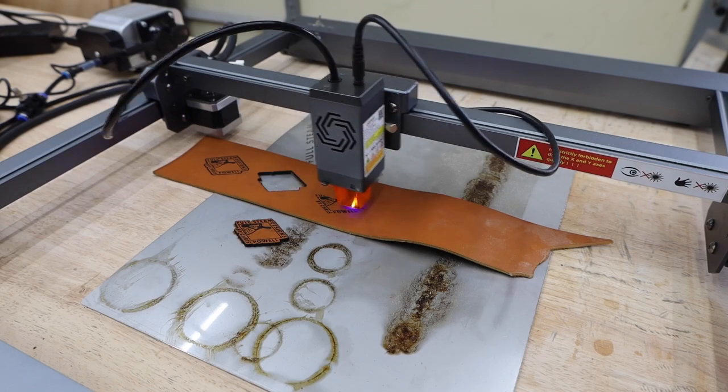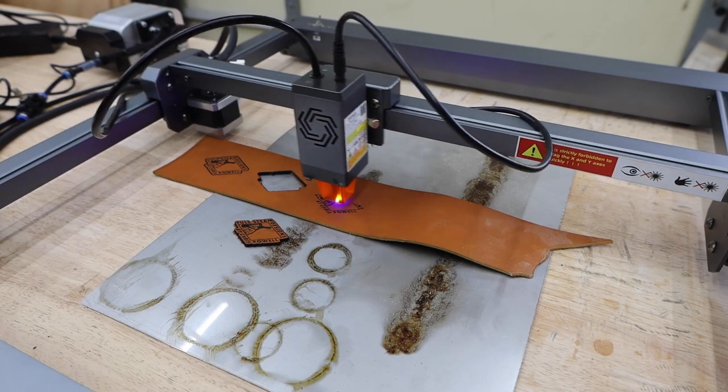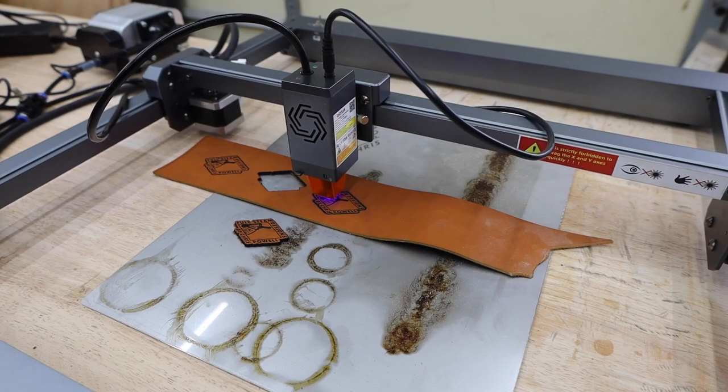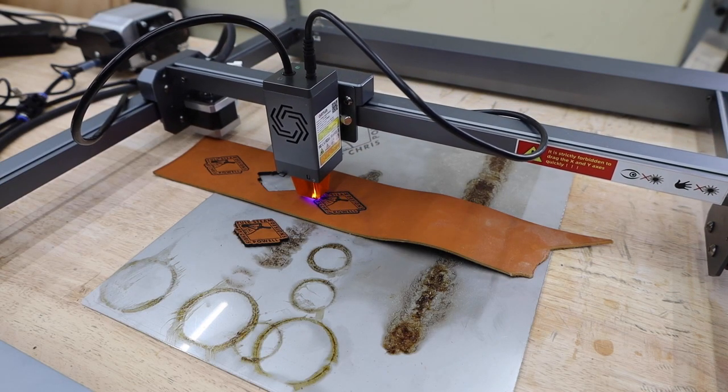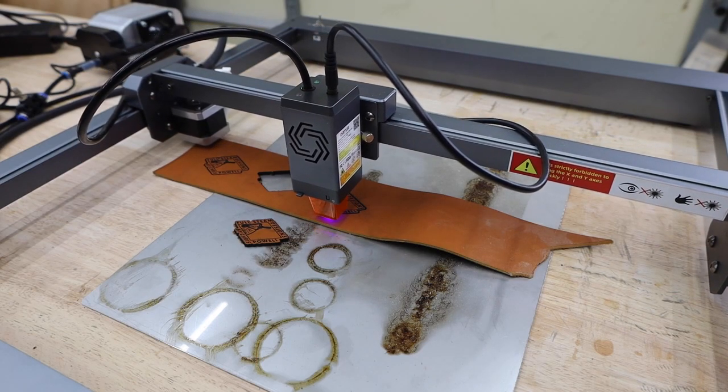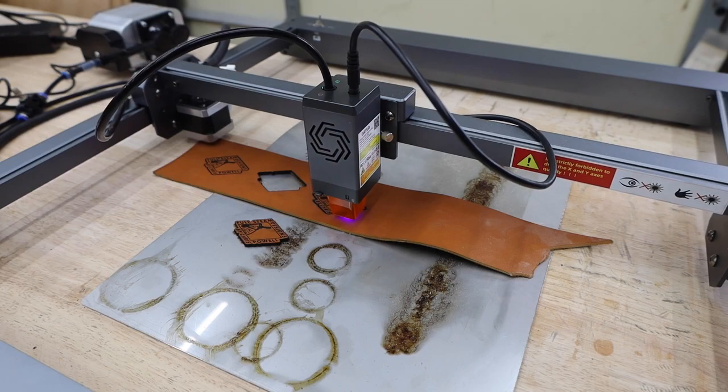Leather patches are a great thing to make with your laser. The logo engraved nice and dark and you can even cut them out. I prefer to keep the speed up and make multiple passes when cutting leather. Just like wood, this will result in less charring on the edges.